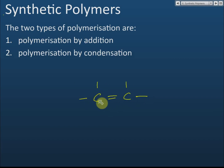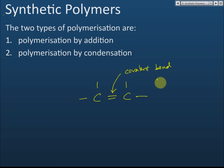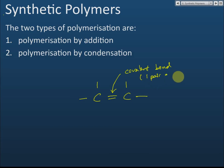Each line in the structural diagram represents a covalent bond. A covalent bond is the chemical bond between non-metals, and each covalent bond represents the sharing of one pair of electrons — as we learned in the chemical bond topic.